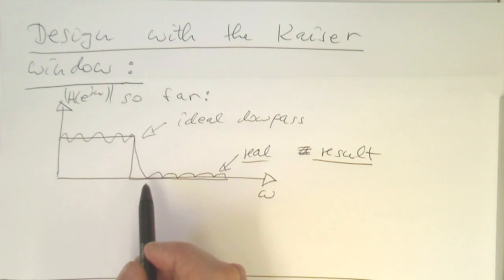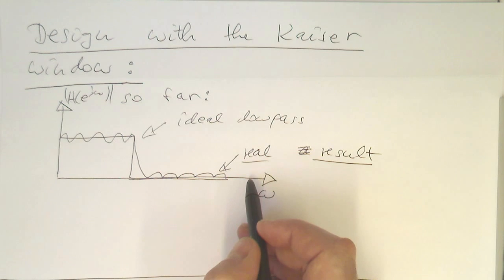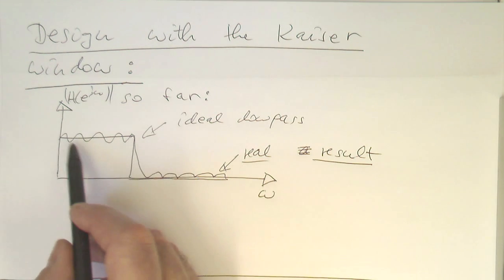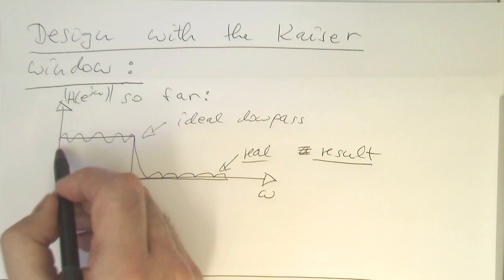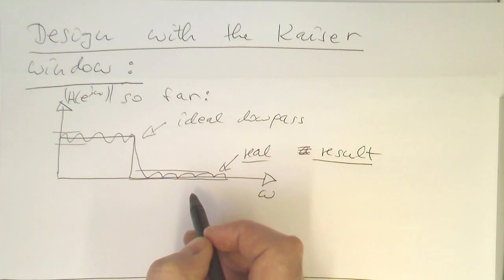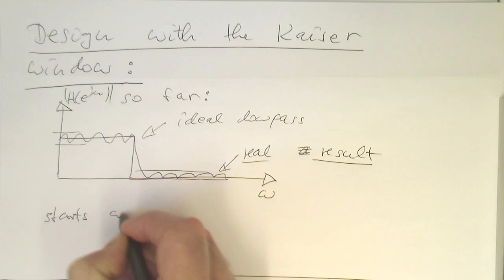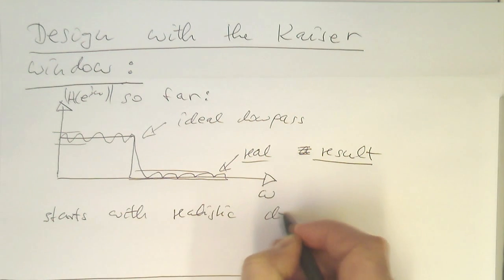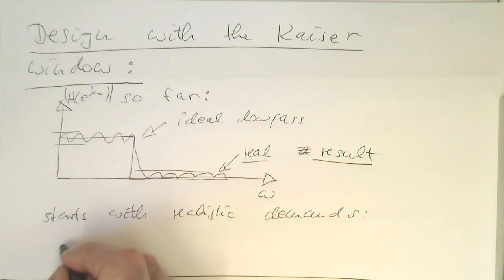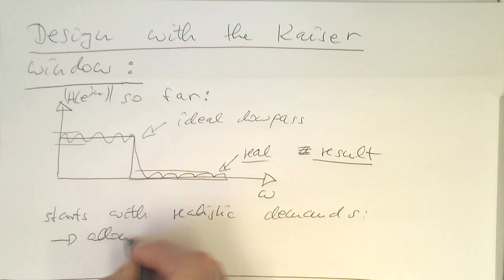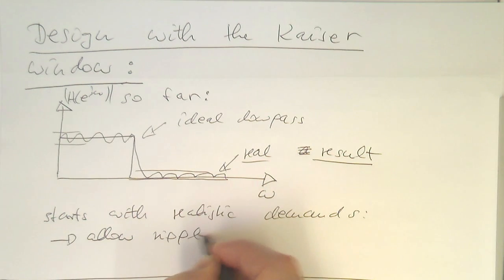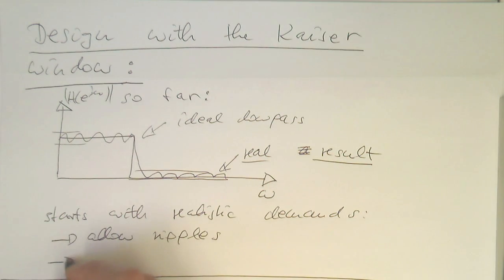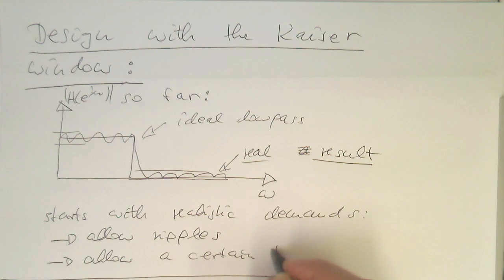The Kaiser window approach essentially starts from this real result by defining certain realistic ripples — allowing ripples in the pass band and ripples in the stop band. So the Kaiser window starts with realistic demands: we allow ripples, and we allow a certain transition width.